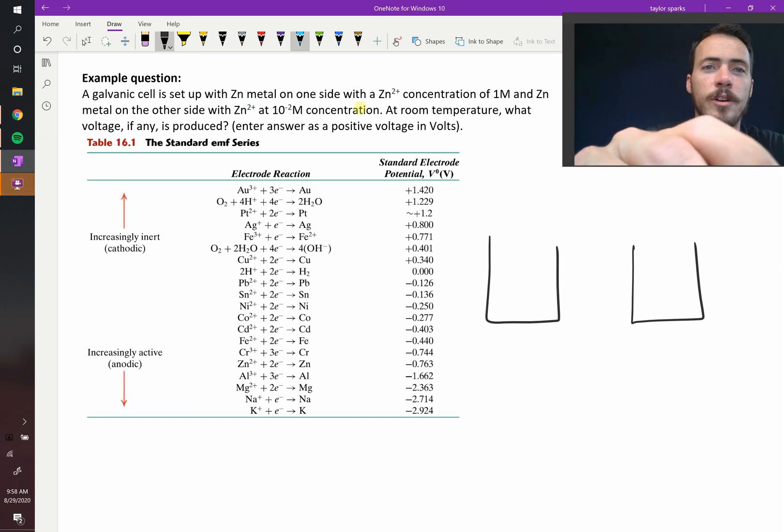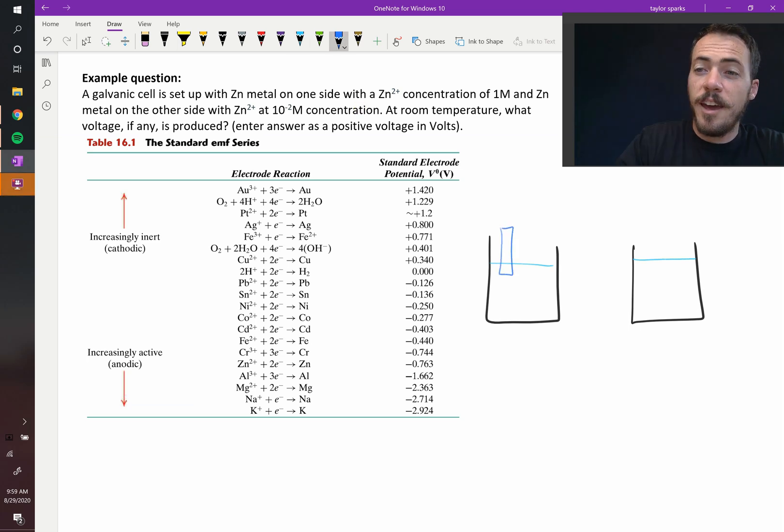Here's an interesting question. Let's consider a galvanic cell as follows. You've got, on the galvanic cell, let's say on the beaker on the left, you've got a bar of zinc, and on the right you've also got a bar of zinc.